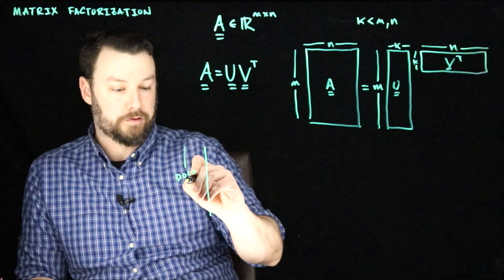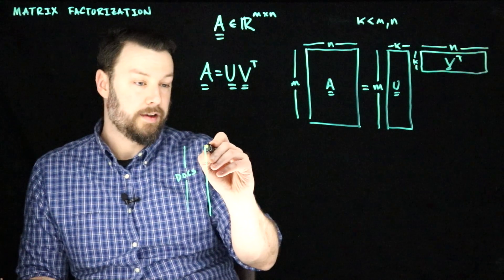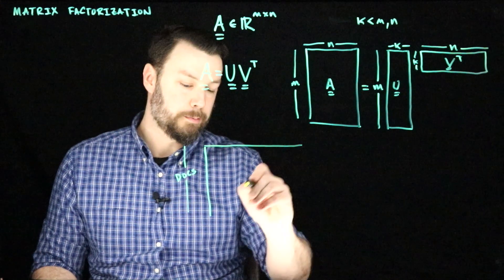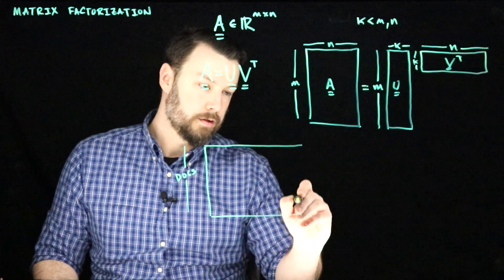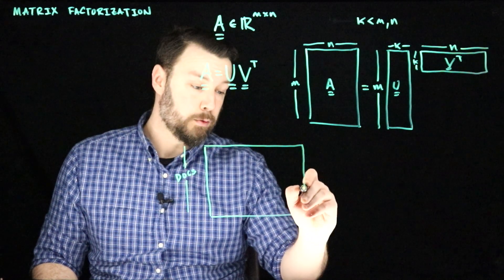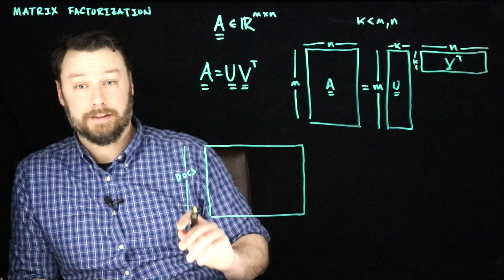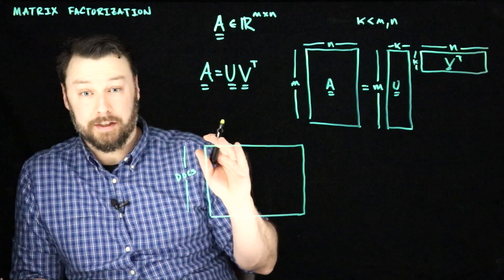So there's some number of documents that are representing the rows of the matrix. And then let's imagine that what we're going to do is represent the different vocabulary words that might exist in those documents. Let's have those be the columns.